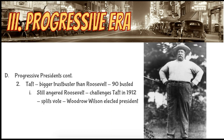Roosevelt is not our only progressive president. We also have one of our fattest presidents and one of our local Ohio presidents, William Howard Taft. Taft was actually a bigger trust buster than Roosevelt — he broke up over 90 monopolies and trusts. However, he still angered Roosevelt. At the end of his administration, Roosevelt had famously said he would only run for one term of office, and he came to regret that. He named Taft as his natural successor, Taft won, but Roosevelt believed Taft didn't go far enough.